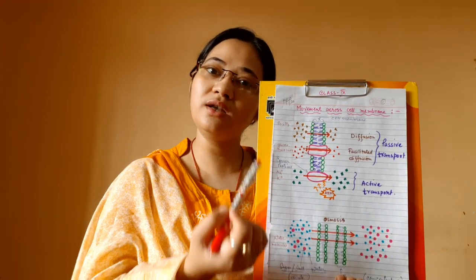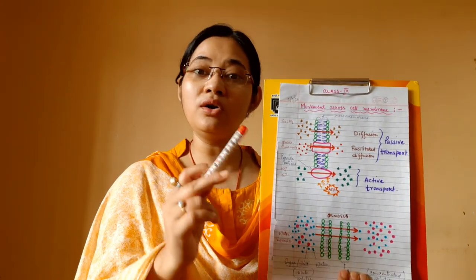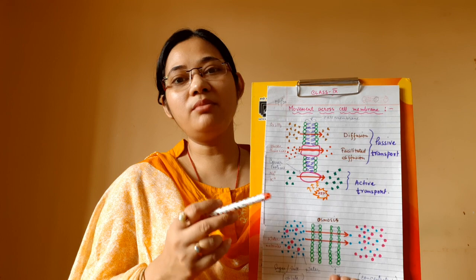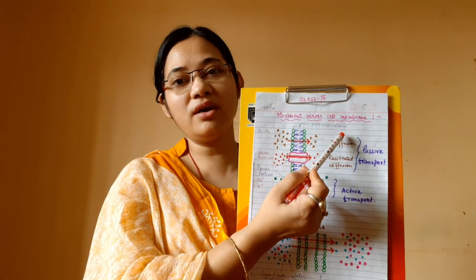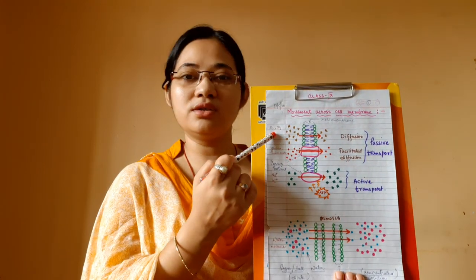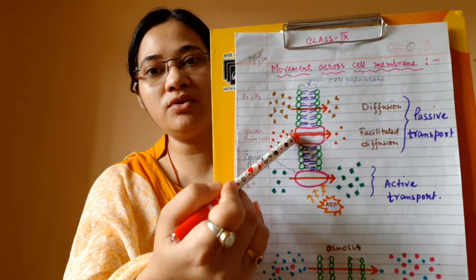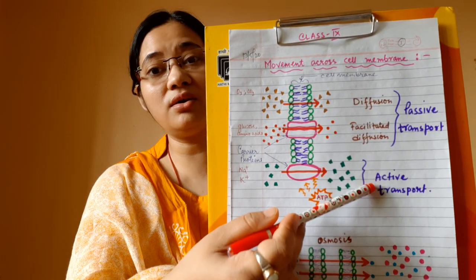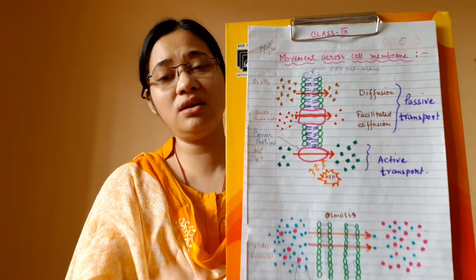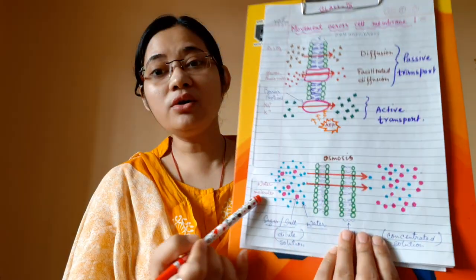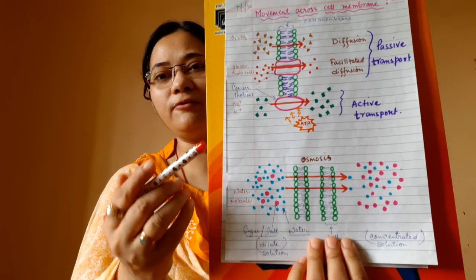All this movement can happen in the opposite direction also, depending on the concentration of biomolecules. For example, during respiration, carbon dioxide produced inside the cell will move from a region of high concentration to one of low concentration. So molecules move across the cell membrane by three processes: diffusion, facilitated diffusion, and active transport — which requires ATP and acts against the concentration gradient.